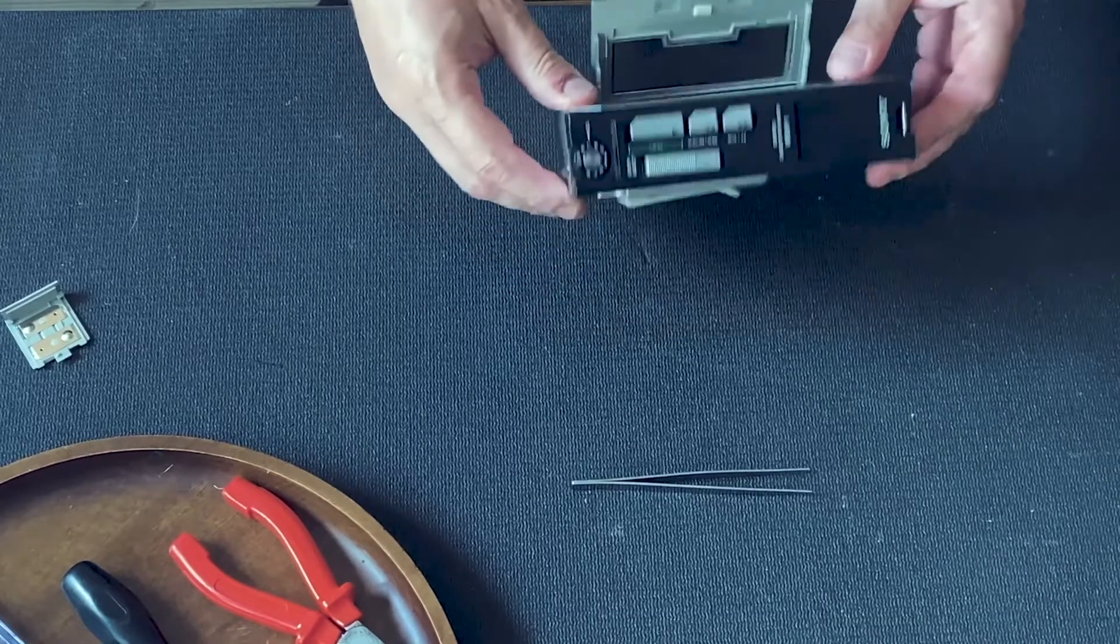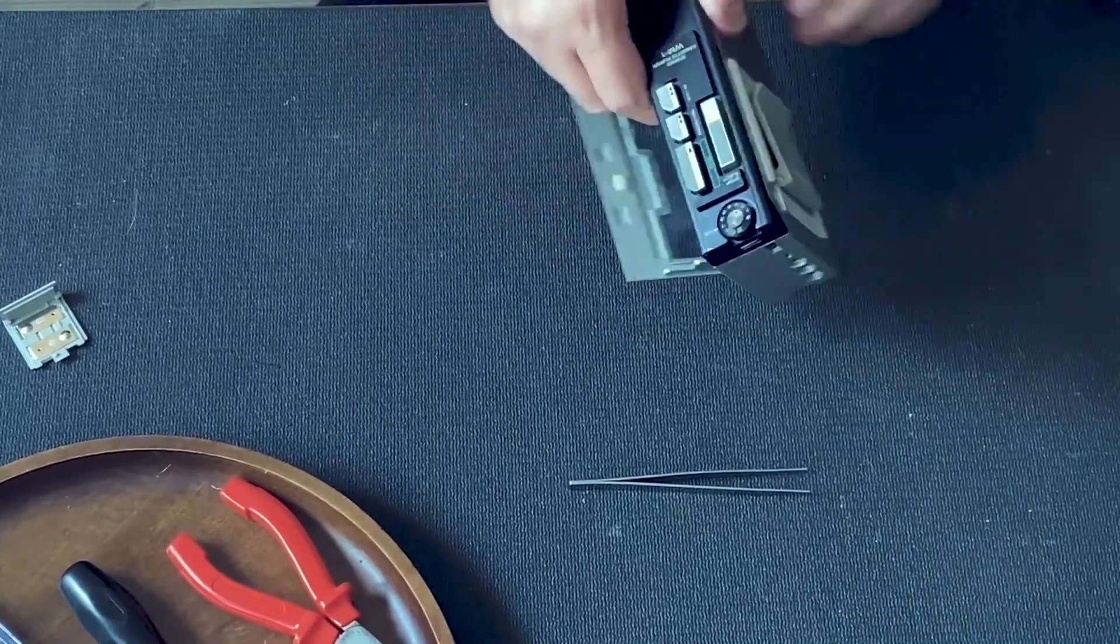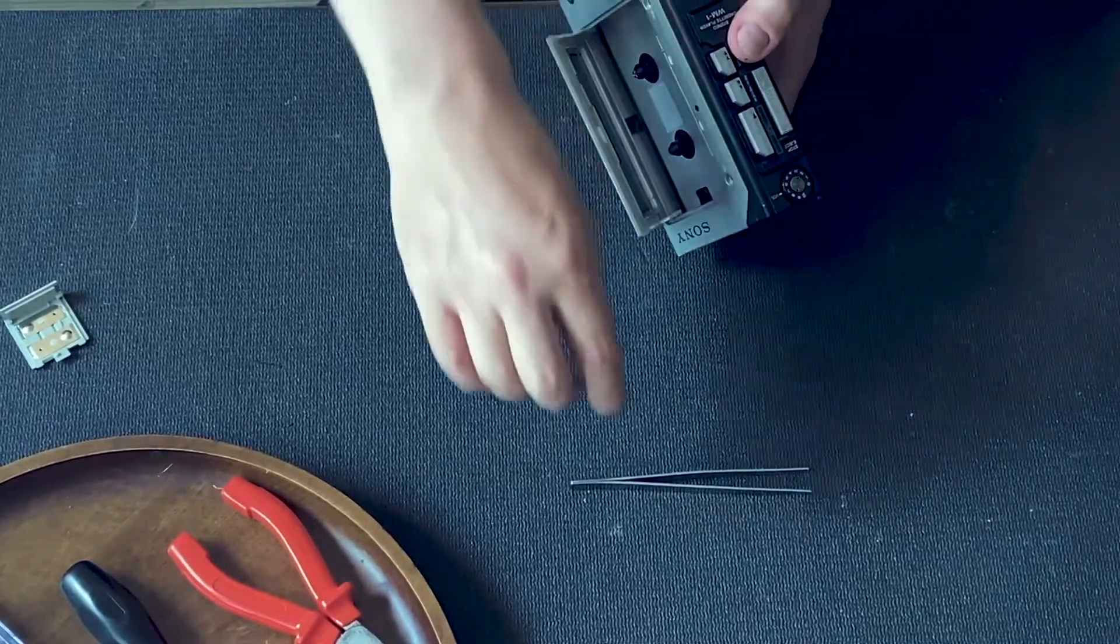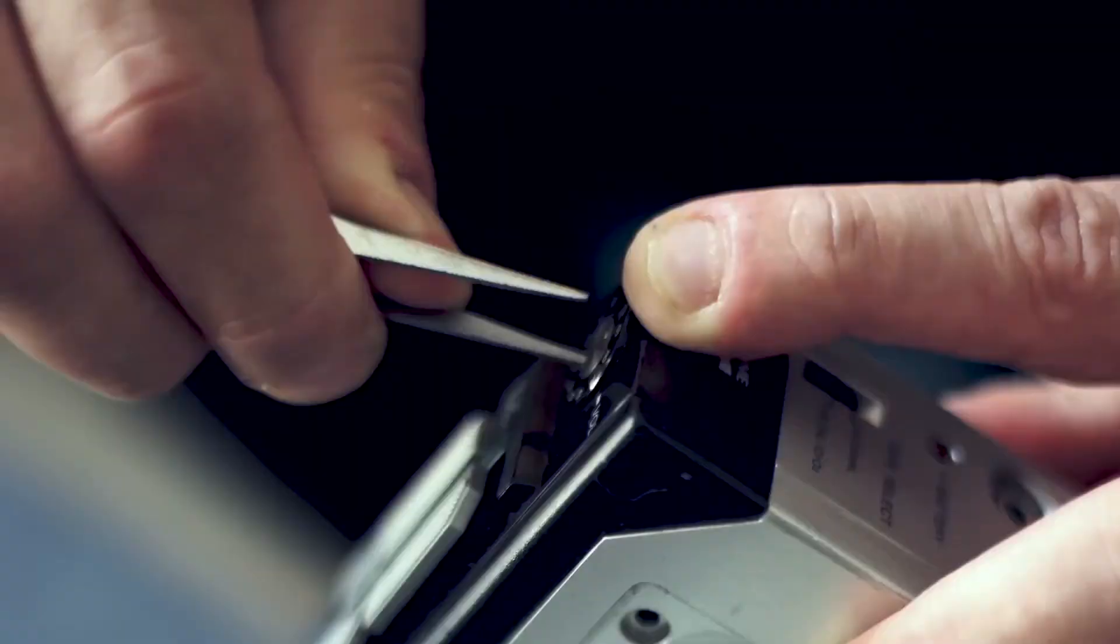Step 2: Detach the volume adjuster. Use pointed tweezers to turn the inner part counterclockwise. Then, loosen the outer part with a flathead screwdriver. Be gentle to avoid damaging the components.